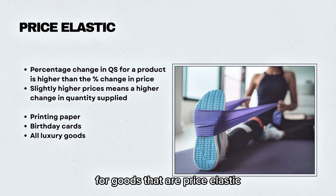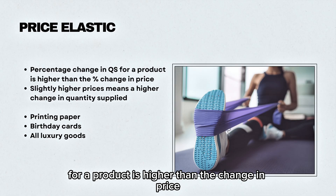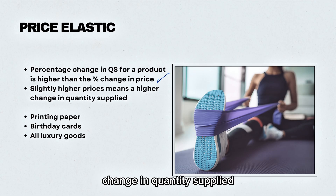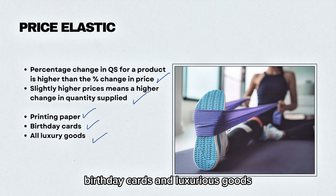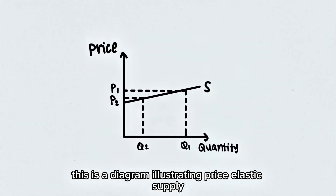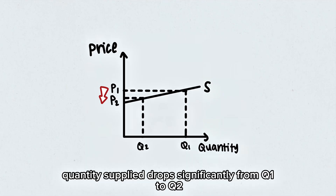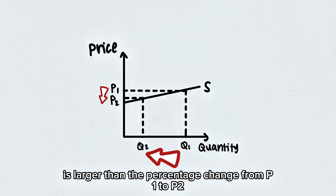For goods that are price elastic, the percentage change in quantity supplied for a product is higher than the change in price. So a small change in price will mean a higher percentage change in quantity supplied. Some examples include printing paper, birthday cards, and luxury goods. This diagram illustrates price elastic supply — when the price falls from P1 to P2, quantity supplied drops significantly from Q1 to Q2, so the percentage change from Q1 to Q2 is larger than from P1 to P2.